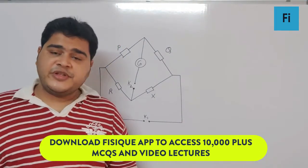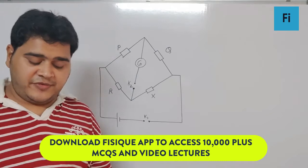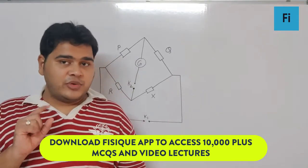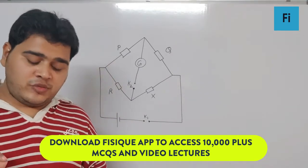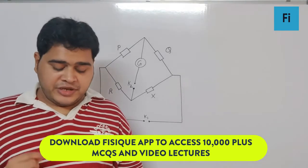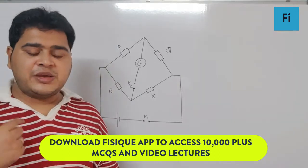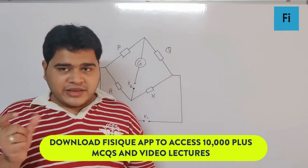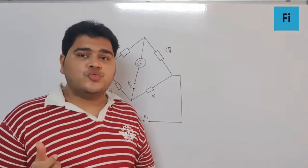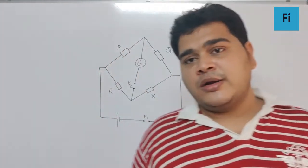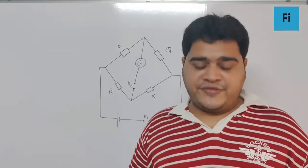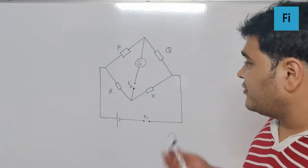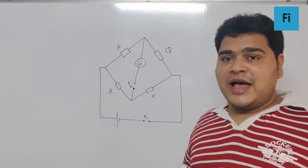The question says a Wheatstone bridge is given in the figure where resistances P and Q are approximately, not exactly equal. When R equals 400 ohms, the bridge is balanced. When R equals 400 ohms, on interchanging P and Q, the value of R for the bridge to be balanced is 405 ohms. Find the value of X.